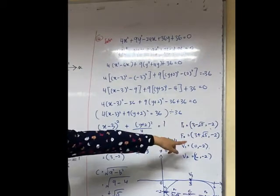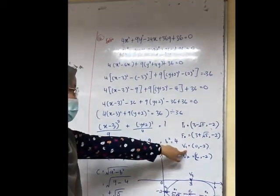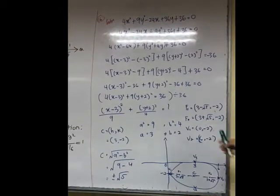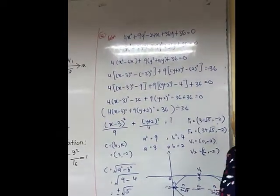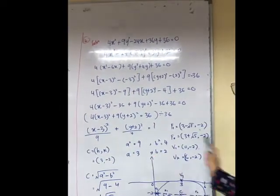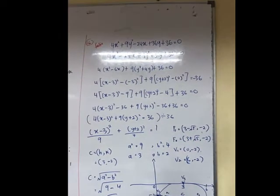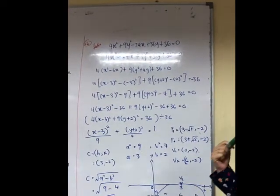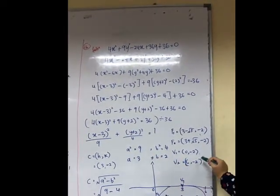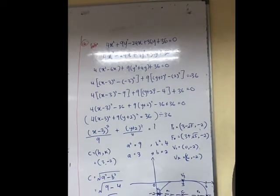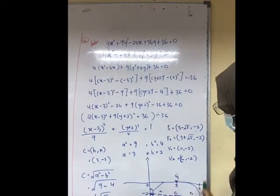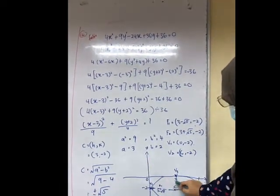And then for vertex, for V1 we use (h - a, k). h is 3, a is 3, so 3 - 3 is 0, and k is -2. For V2 we use (h + a, k). So h is 3, a is 3, 3 + 3 is 6, and k is -2. Then the question asks us to draw the ellipse.